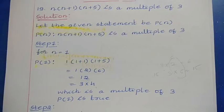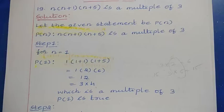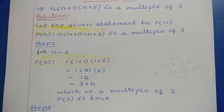n(n+1)(n+5) is a multiple of 3. This is a different question compared to question numbers 1 to 17. Here, they have not given left-hand side and right-hand side, and there is no inequality. Instead, the statement is given directly in the form of a sentence. So now let us solve this.